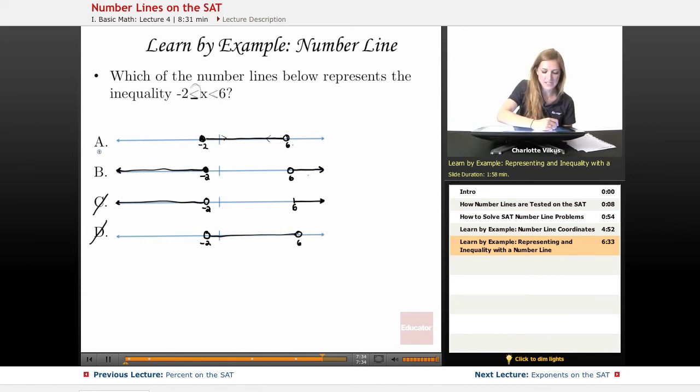But if I wasn't sure at this point, then I could also look at a number that should fit in here. So x should be able to be less than 6, as long as it's greater than negative 2. So 5 is both less than 6 and greater than negative 2.